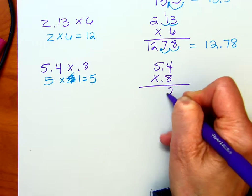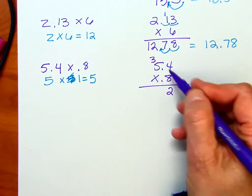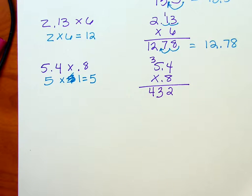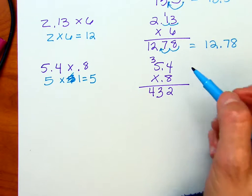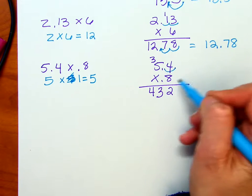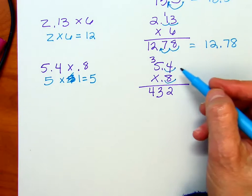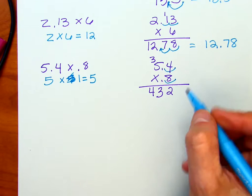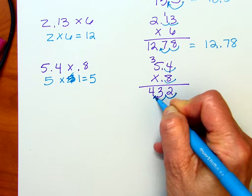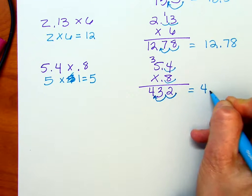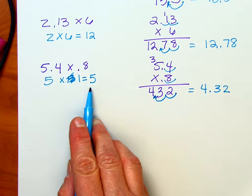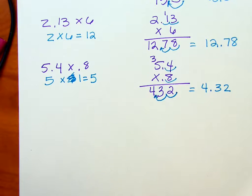8 times 4 is 32, carry the 3. 8 times 5 is 40, plus 3 is 43. Hopefully you're kind of getting the hang, it's just like working with whole numbers. Notice that these two factors each have a decimal point. There's one decimal place here and another in the second. I want to add those two decimal places together. So I'm going to move my decimal point from this position two places to the left. And I'm left with 4.32, which is close to the 5 that we estimated.